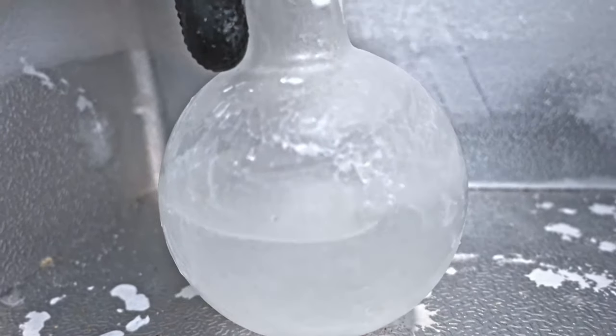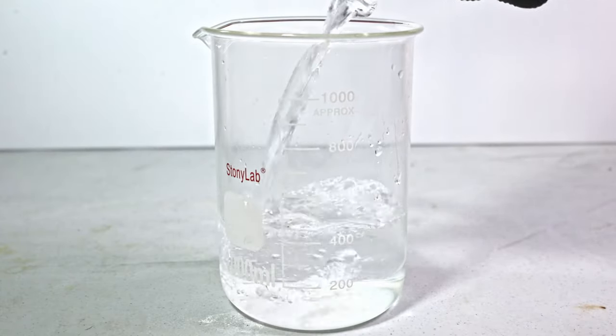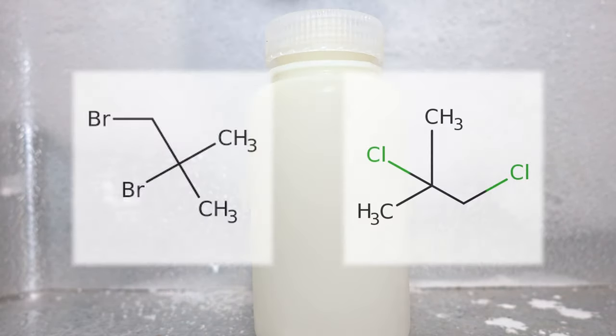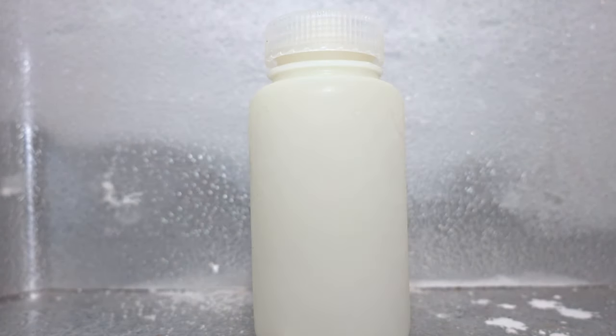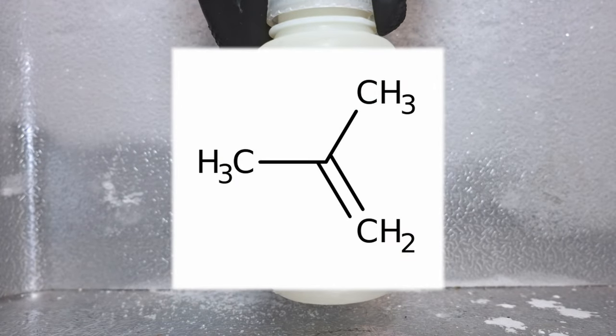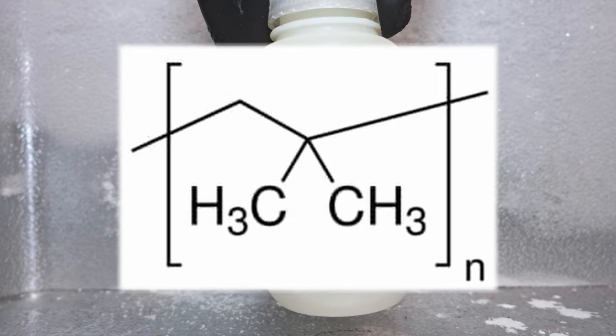Isobutylene is arguably even more versatile than tert-butanol because it is a very reactive alkene. It can react with hydrogen halides to form tert-butyl halides, elemental halogens form vicinal dihalides, hypochlorites and hypobromites form epoxides. Acid catalysts can polymerize isobutylene to polyisobutylene, which are important plasticizers.